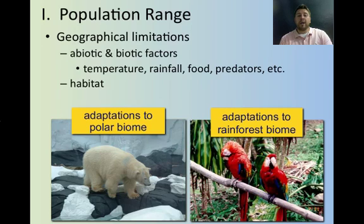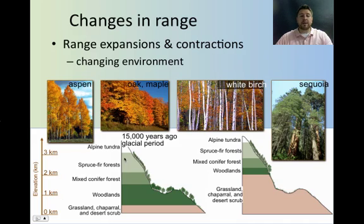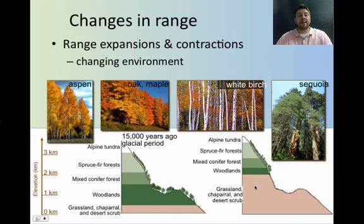A polar bear is going to have a certain range based on its physiological constraints. Same way with a lot of rainforest species — they're going to have adaptations that allow them to live in that particular biome, but probably have a hard time in any other biome. Range can change, and usually it's due to a changing environment. If you look back 15,000 years ago during the last glacial period, you can see where woodlands, mixed conifer, and alpine tundra existed at lower elevations. Over the last 15,000 years, the forests have basically retreated further up the mountain because that's where it's cooler. So the range can change.